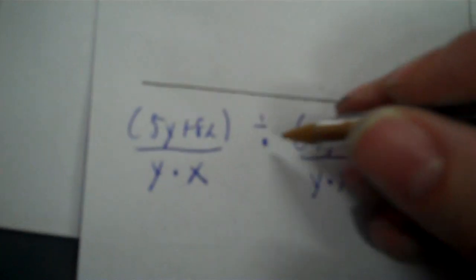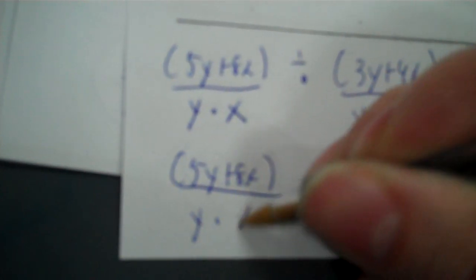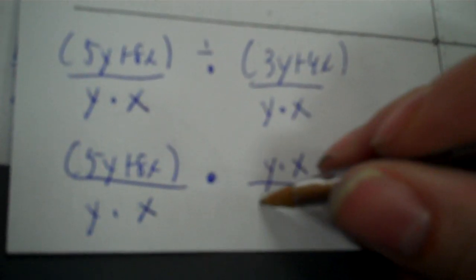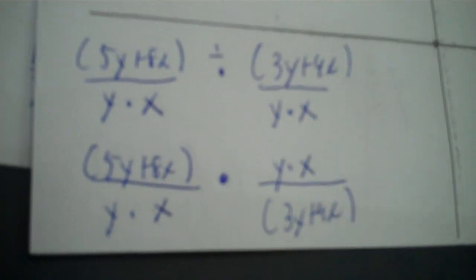Switch that to multiplication. The first fraction stays as the quantity 5y plus 8x over y times x. Flip the second to y times x over the quantity 3y plus 4x — that's how you divide fractions. The parenthesis factors stay in the answer since they're not the same — they have to be a dead match and they're not. So the answer is 5y plus 8x over 3y plus 4x. The outside factors y times x and y times x are a dead cancel.